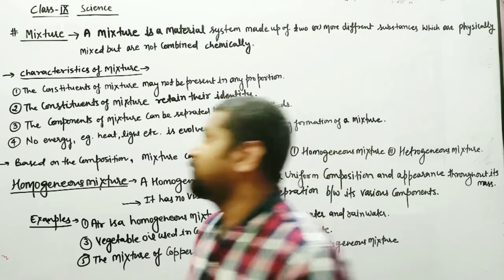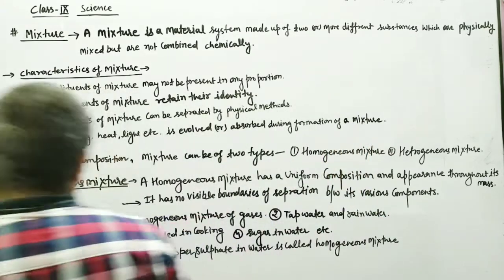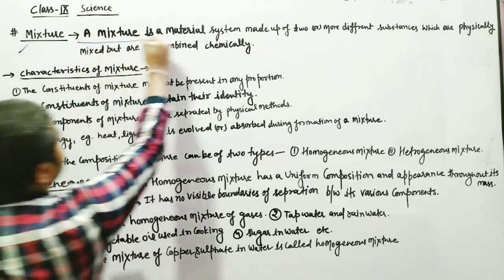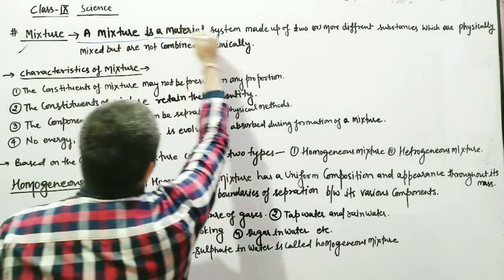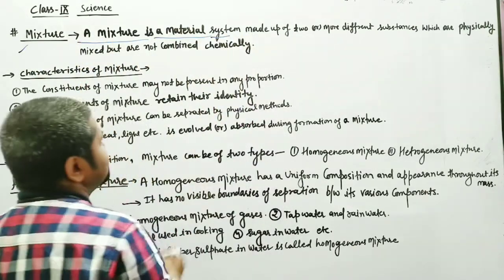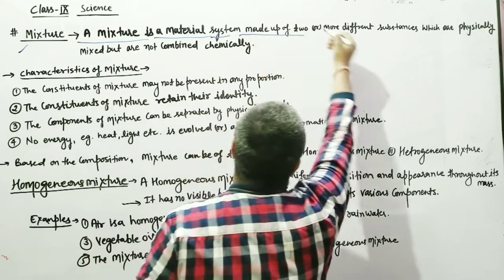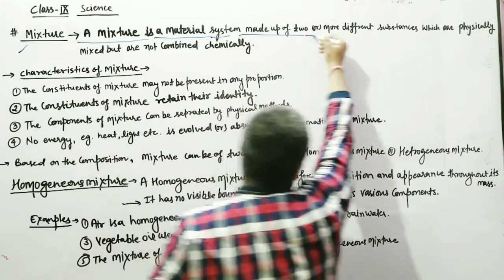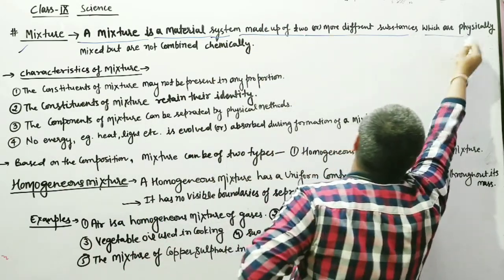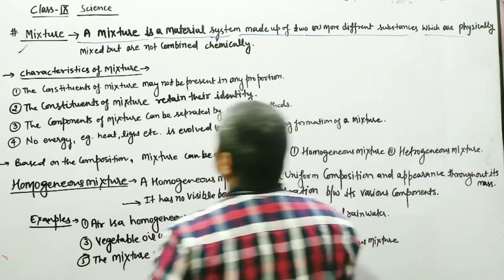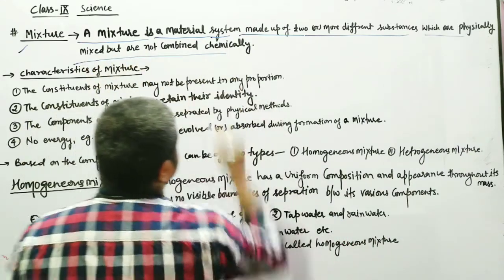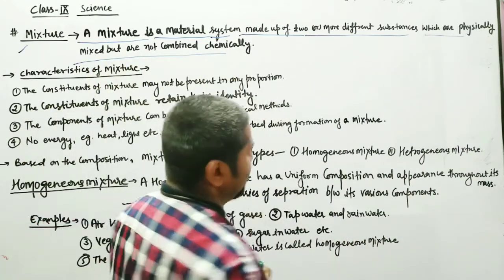Let's start with the definition of the mixture. A mixture is a material system made up of two or more different substances which are physically mixed but are not chemically combined.